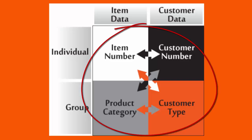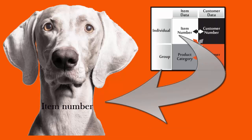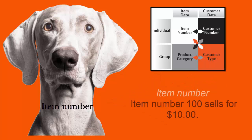On the inside of the table is the real content. There are eight ways that you can set up your pricing. The first, the white box, is labeled Item Number. This means that Item Number 100 sells for a set price, say $10. You can set your prices according to the item.